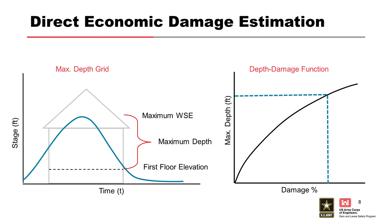If the structure does not collapse, we estimate how much damage occurs within it. You need a good understanding of the first floor elevation and ground terrain to determine the maximum water surface elevation at that location throughout the flood. That informs the depth of flooding on the structure, and once we have that value, we apply depth damage functions to associate that maximum depth with a percent damage.